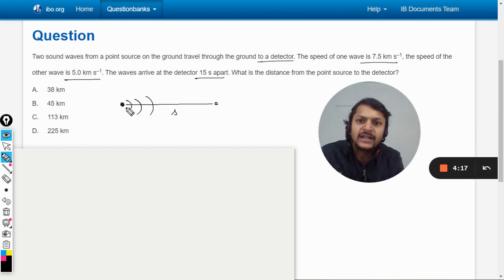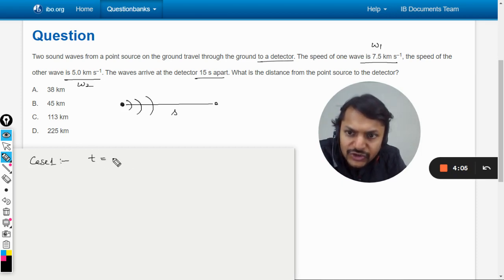They are created simultaneously and arrive at the detector 15 seconds apart. Let us call this wave 1 and this wave 2. In case 1, what will be the time taken?